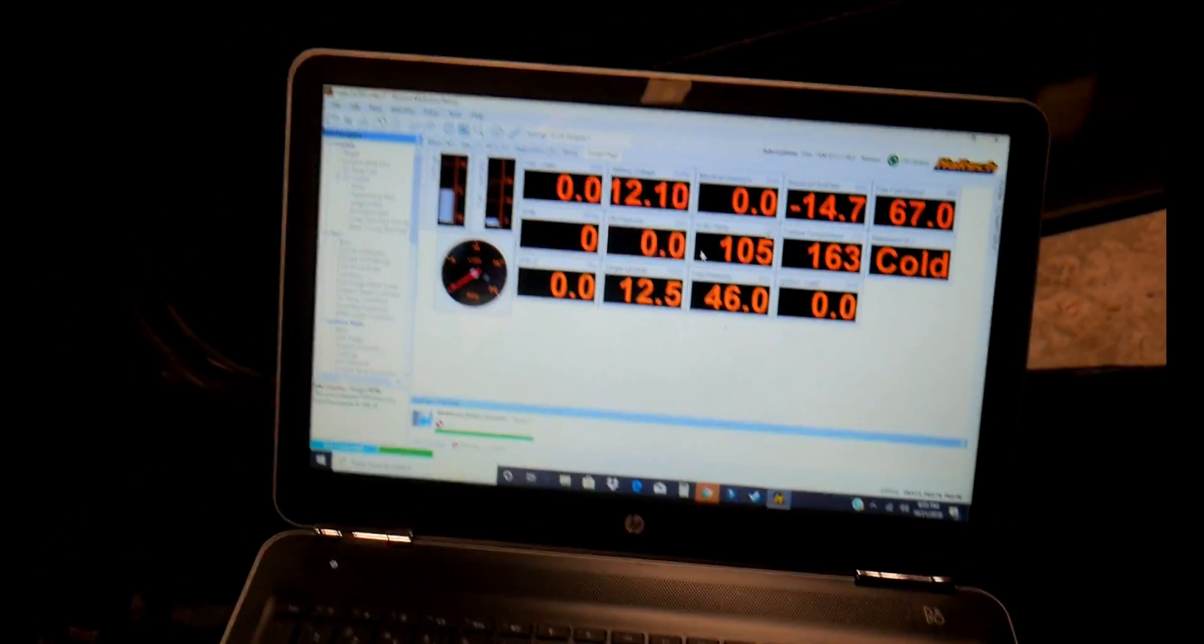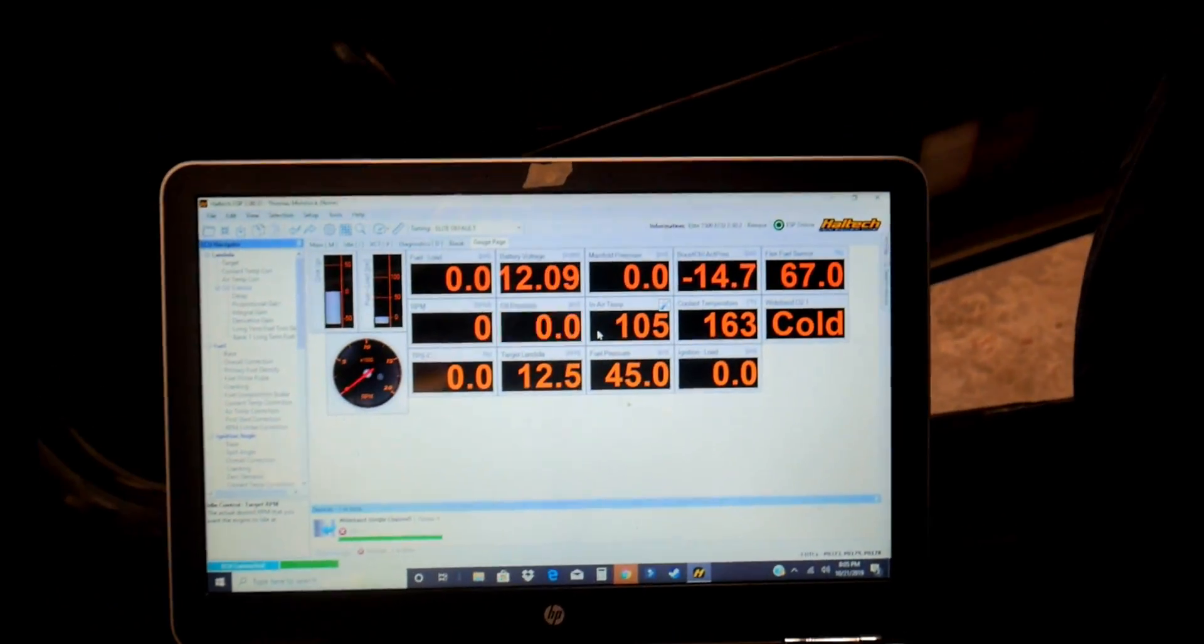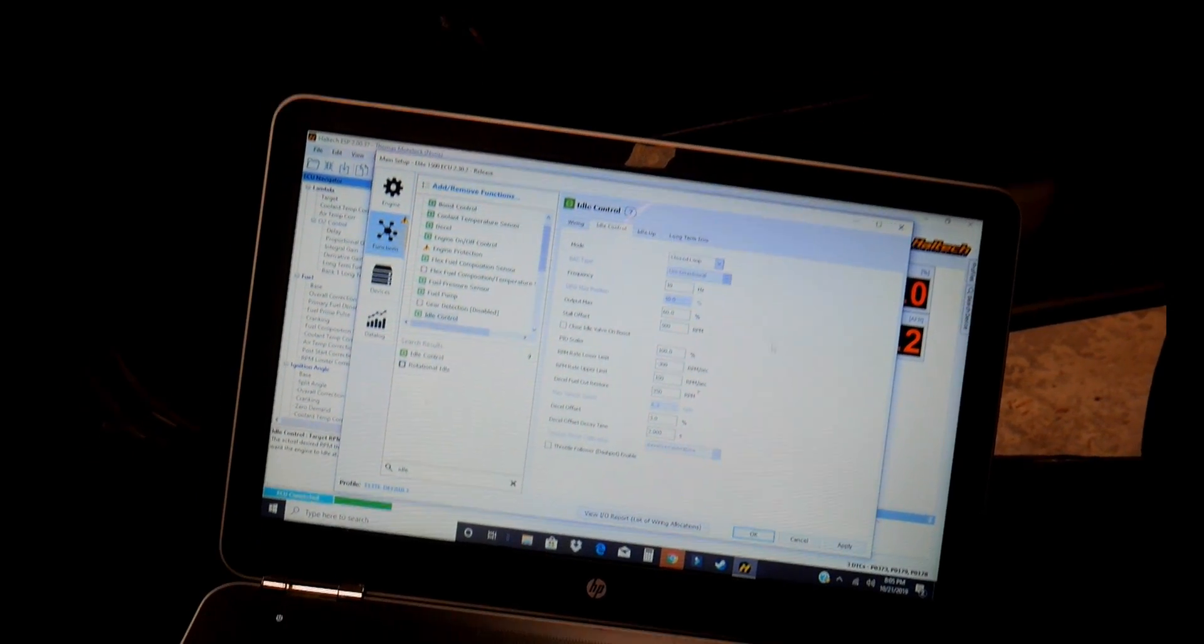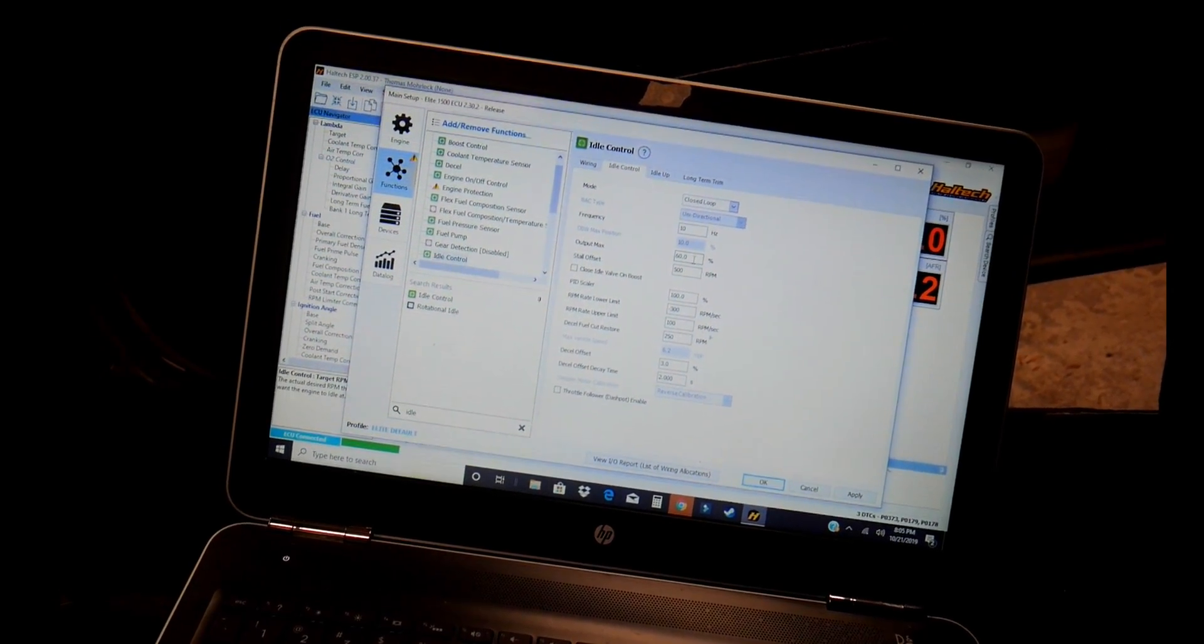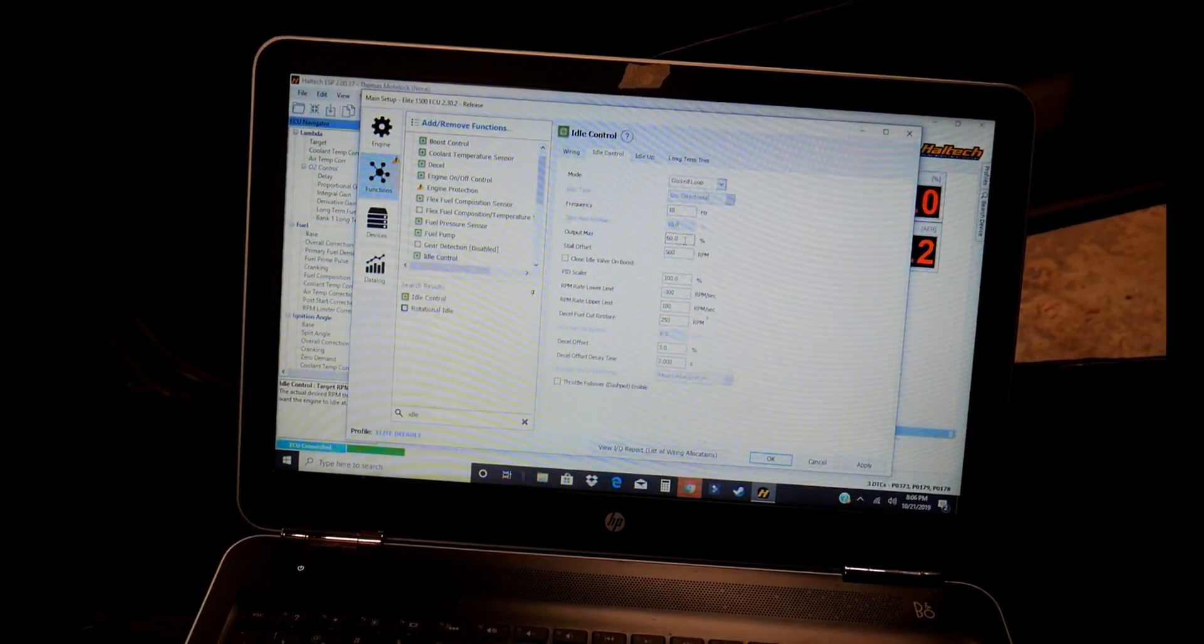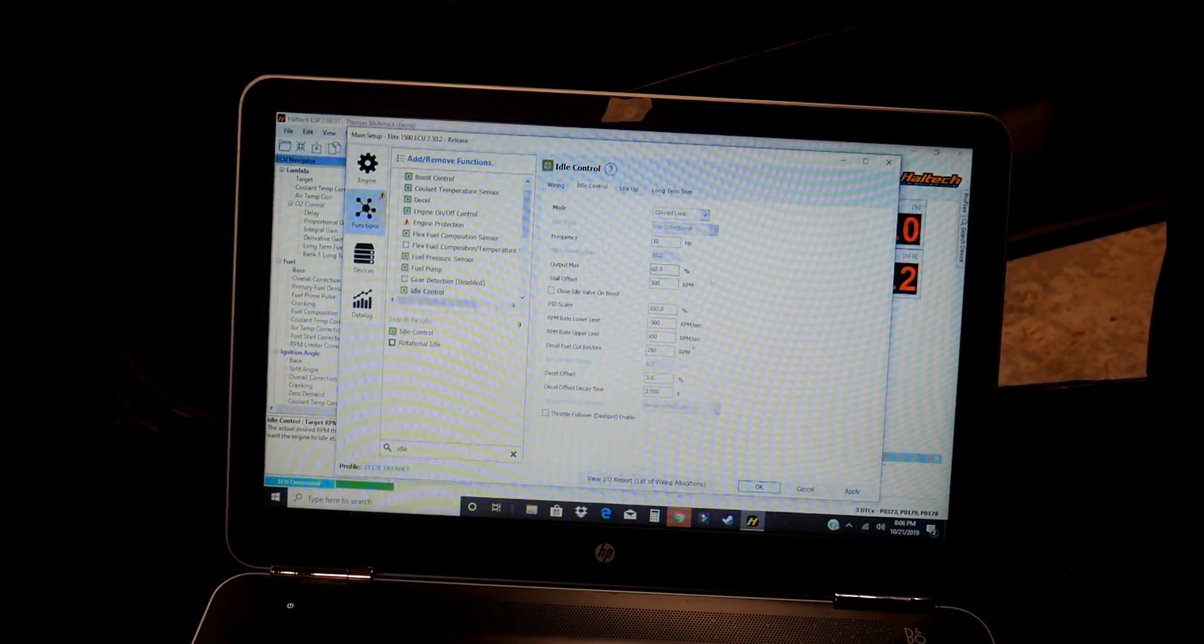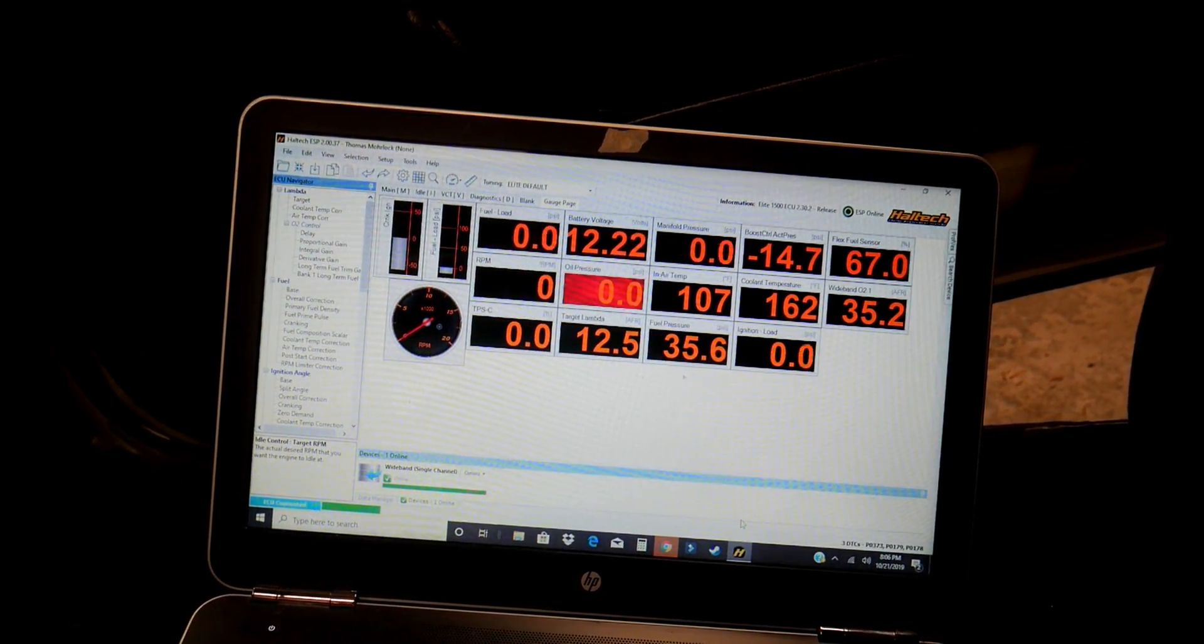All right guys, so here we go. I'm going to show you that the flex fuel is up to 67% ethanol. I messed around with the BAC valve settings for quite some time to achieve the best result. I dropped it down to 10 Hz and 60% output max. Those are the main things that I changed, and it does still idle very high, but the point is we can get it fired up and idling even with this flex fuel setup before we've seen the tuner.